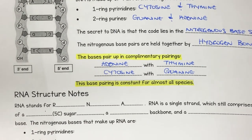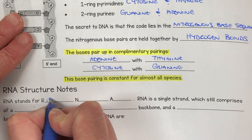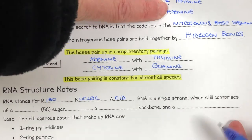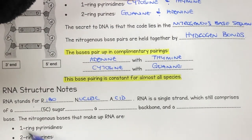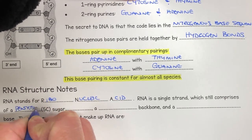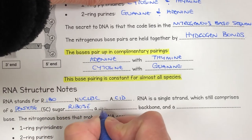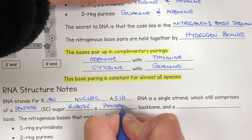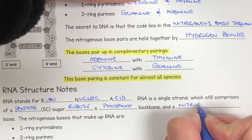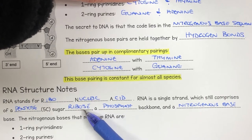Let's look at RNA. RNA is very similar, nothing really much different, apart from the fact that RNA stands for ribonucleic acid. RNA is a single strand — DNA was double. It still has a pentose sugar, so still a five-carbon sugar, which in this case is ribose. It still has a phosphate backbone and a nitrogenous base, so it's very similar. The only difference at this point is the ribose sugar.